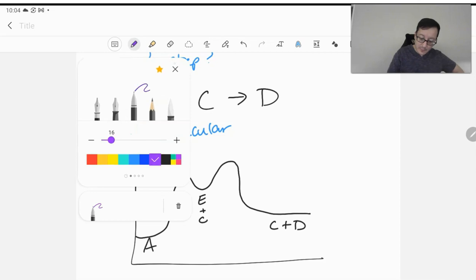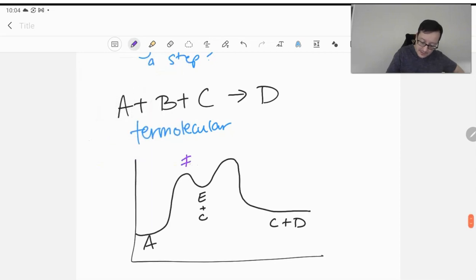We have, of course, transition states. Two of them. We have transition state one, transition state two. They have their own activation energies.